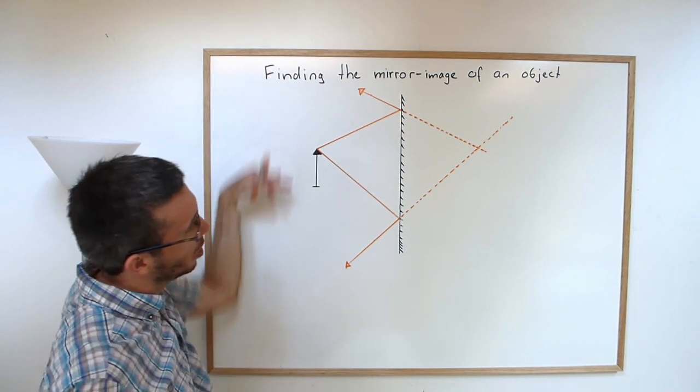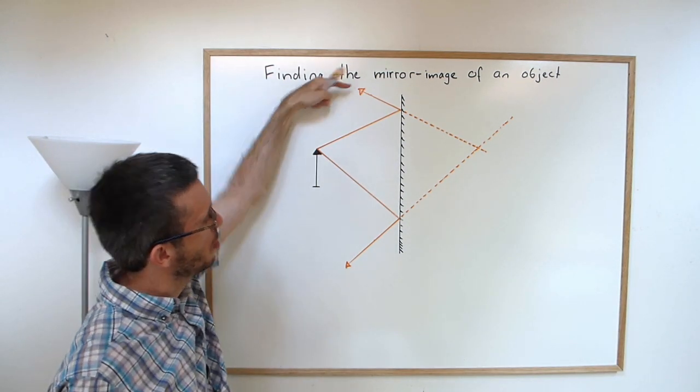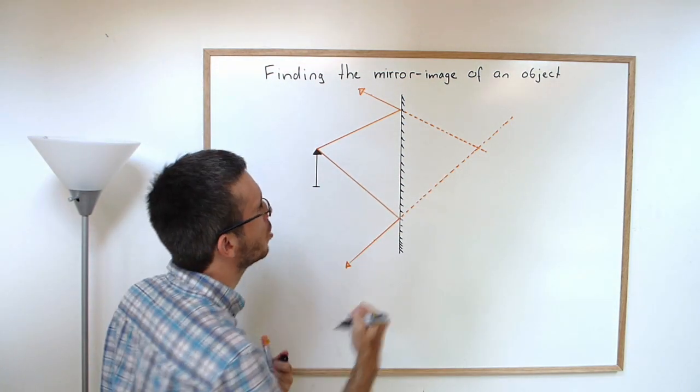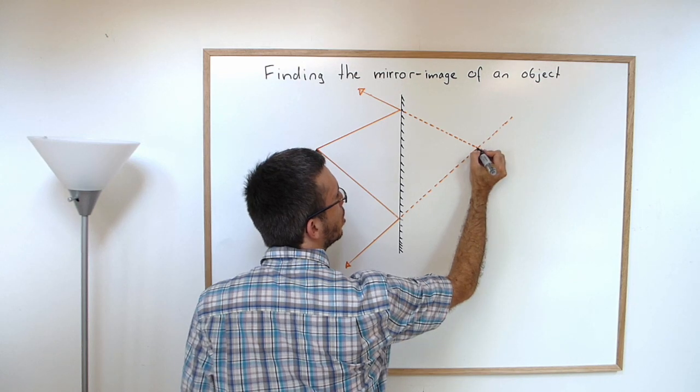Now for somebody that is looking from the left side of the mirror, it appears as these two rays will be coming from one location, which is the location of the tip of our arrow.